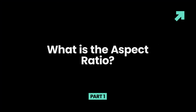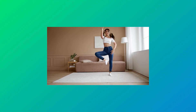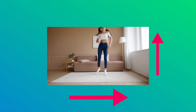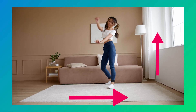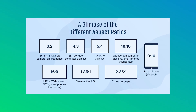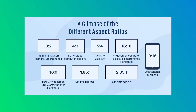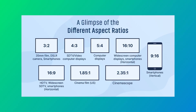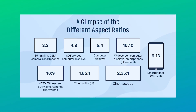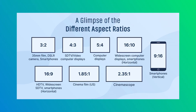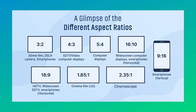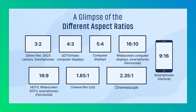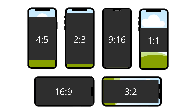Part 1: What is the aspect ratio? The term aspect ratio refers to the relationship between the width and height of a video, and it is irrelevant to the actual physical size of the image. The most common video aspect ratios are 4:3 (1.33:1) and 16:9 (1.78:1). The former is the standard TV format, while the latter is the latest widescreen TV format.